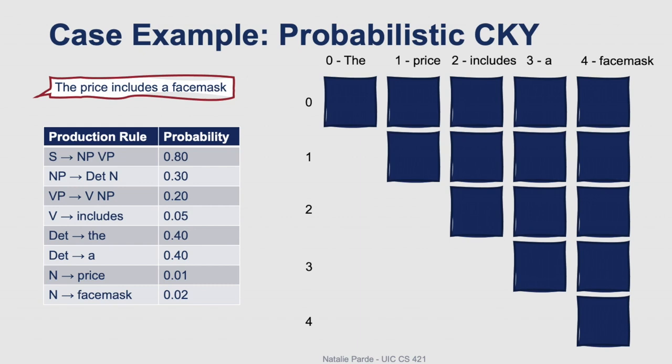We'll start off just like with classic CKY in the upper left-hand corner, so we're looking for a production rule that matches the single word "the". We find one, and the catch is that not only do we fill the cell with the name of the matching constituent, we also include the corresponding probability. We do the same thing with "price", "includes", "a", and "face mask", and now we've filled out all of our one-word constituents, so we can move on to the two-word constituents.